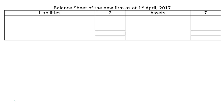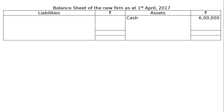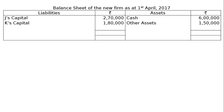New balance sheet of the firm as at 1st April 2017: On the asset side, cash was previously Rs. 2 lakh and new partner brings Rs. 4 lakh, so cash is Rs. 6 lakh. Other assets Rs. 1,50,000. On the liability side: J's capital Rs. 2,70,000; K's capital Rs. 1,80,000; reserve is nil as it is distributed; M's capital Rs. 3,00,000. Both sides total Rs. 7,50,000.